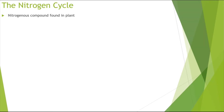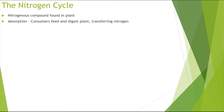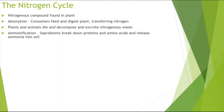So starting from the nitrogen: we have the nitrogenous compound found in the plant — this could be amino acids or proteins. Absorption occurs by the consumers, who would feed and digest that plant, transferring the nitrogen from the plant to the consumer. Then the plants and animals would die and decompose, and the animals would also excrete nitrogenous waste — faeces and urea. Ammonification would then occur, where saprobytes and decomposing bacteria break down the proteins and amino acids and release ammonia into the soil.